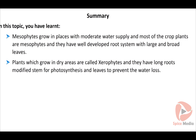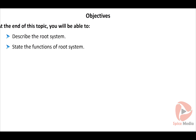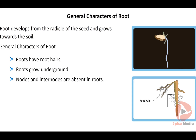At the end of this topic, you will be able to describe the root system and state its functions. The root develops from the radicle of the seed and grows towards the soil. In general, roots grow underground and have hair-like structures called root hairs. Unlike shoots, roots do not have nodes or internodes.